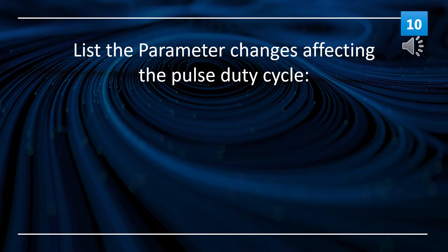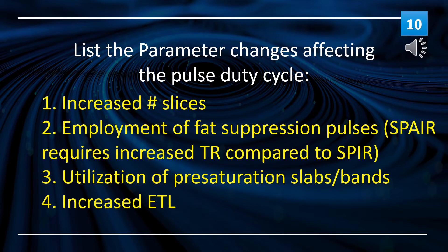List the parameter changes affecting the pulse duty cycle. The parameter changes are: 1. Increased number of slices. 2. Employment of fat suppression pulses. 3. Utilization of pre-saturation slabs/bands. And 4. Increased echo train length.